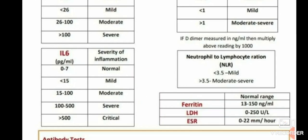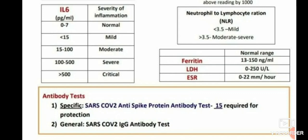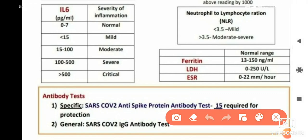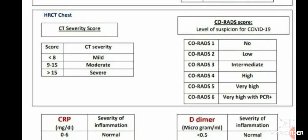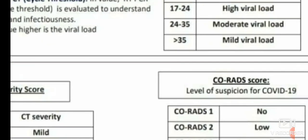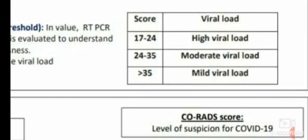For antibody testing, we prefer the SARS-CoV-2 anti-spike protein antibodies test — 15 is required for protection — and also the general SARS-CoV-2 IgG antibodies test.